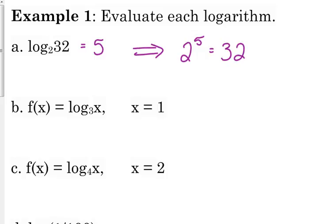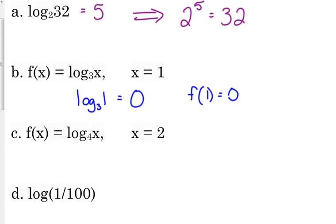Let's look at it in function form. f of x is equal to log base 3 of x. What if x is 1? So that's saying log base 3 of 1 is 3 to what power is 1? Is 0 power. 3 to the 0 power is 1. So in this case, if we wanted to write it in function form, f of 1 is 0.